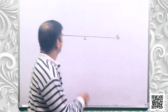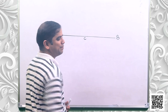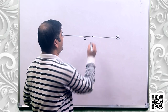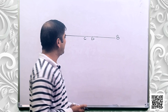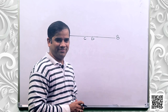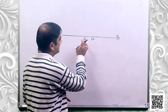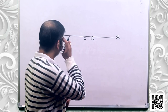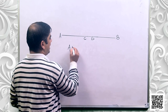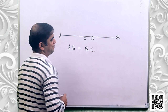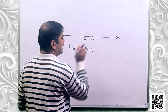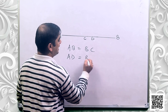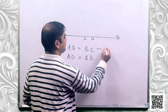Let us do it. This is line segment AB and C is the midpoint, so AC is equal to BC. Let us assume another point D, and we need to prove that C and D coincide — that means there is only one midpoint in a line segment. C is midpoint and D is another midpoint, so AD is equal to BD. This is equation 1 and this is equation 2.